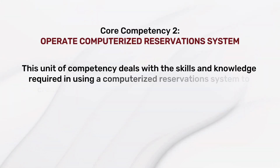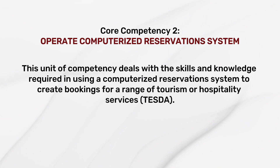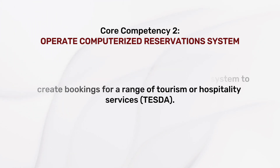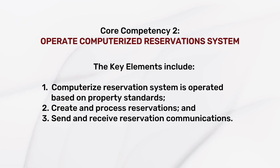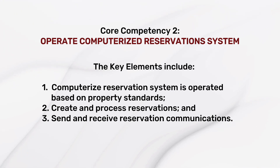This unit of competency deals with the skills and knowledge required in using a computerized reservation system to create bookings for a range of tourism or hospitality services. The key elements include: computerized reservation system is operated based on property standards, create and process reservations, and send and receive reservation communications. For a clear understanding about this, check these two sample scenarios.